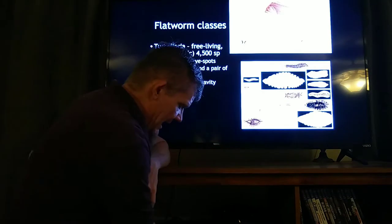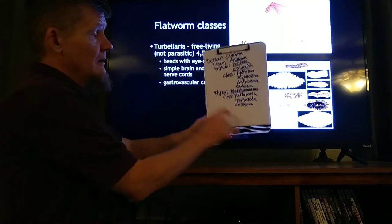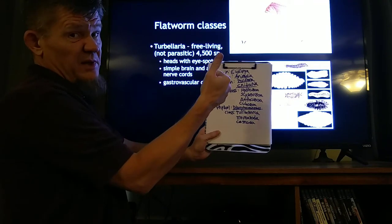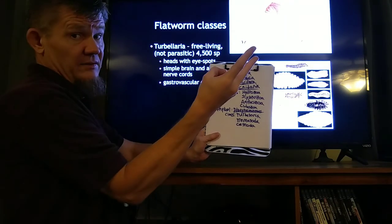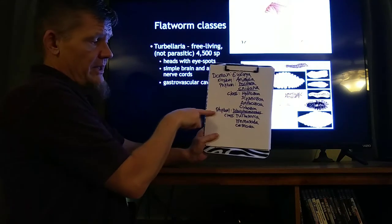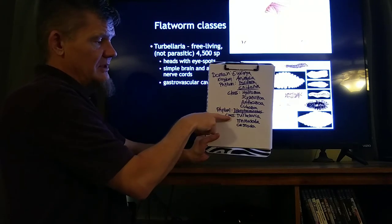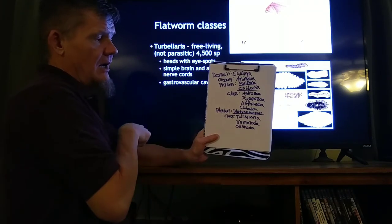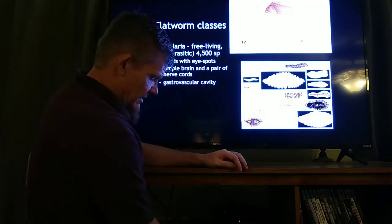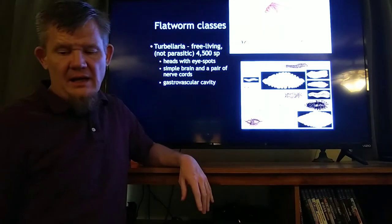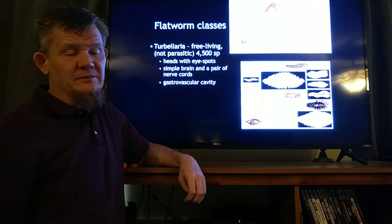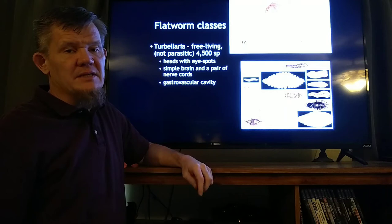Our first class of phylum Platyhelminthes — we've talked about sponges, the Poriferans, and the jellies, the Cnidarians. Now we're going to talk about the Platyhelminthians. Our first class of Platyhelminthians are the Turbellarians. There's not really a common name for Turbellarians — they're just called Turbellarians. They have bilateral symmetry because all flatworms have bilateral symmetry. There are about 4,500 species of Turbellarians.